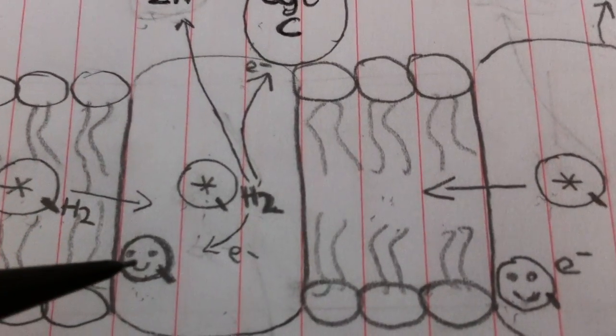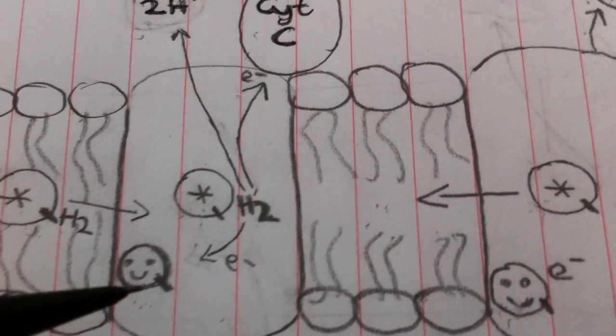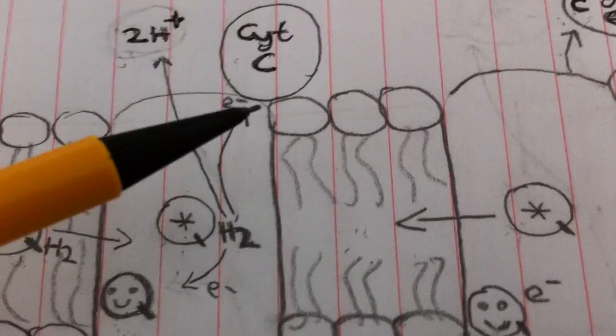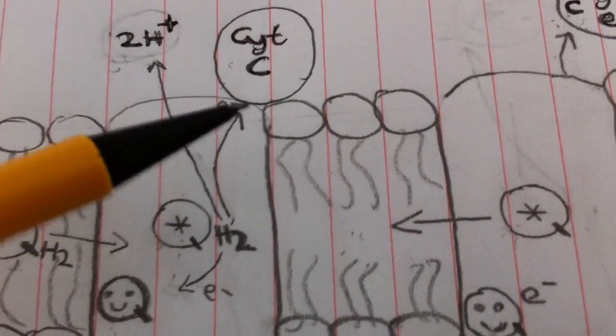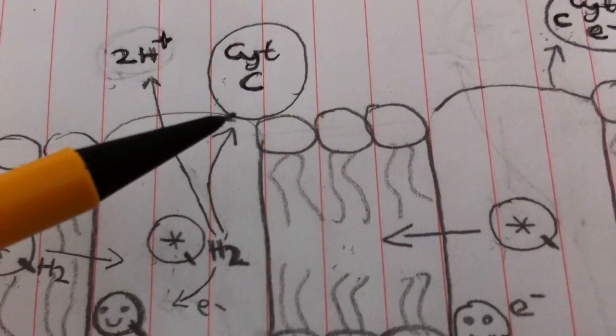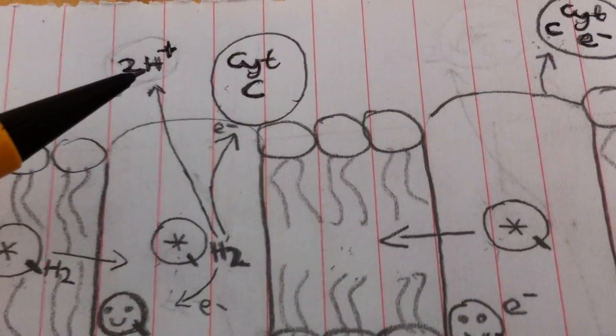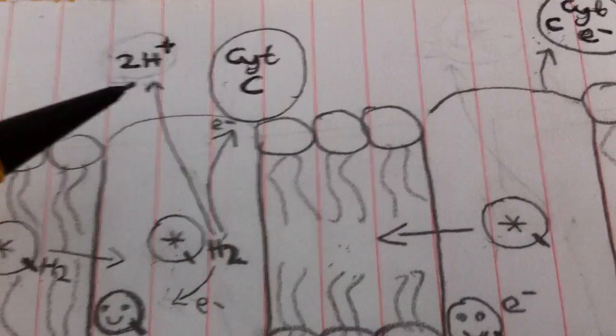It gives one of its electrons to this oxidized coenzyme Q that was already there. It gives another electron to cytochrome C, which is docked with complex 3, waiting to take an electron to complex 4. And its two protons get pumped out into the intermembrane space to create the gradient for making ATP.